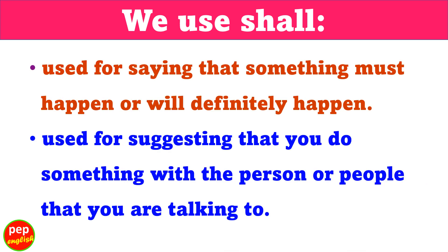We use will to express beliefs about the present or future, to talk about what people want to do or are willing to do, to make promises, offers and requests, to make predictions, talk about decisions. We use shall: used for saying that something must happen or will definitely happen; used for suggesting that you do something with the person or people that you are talking to.